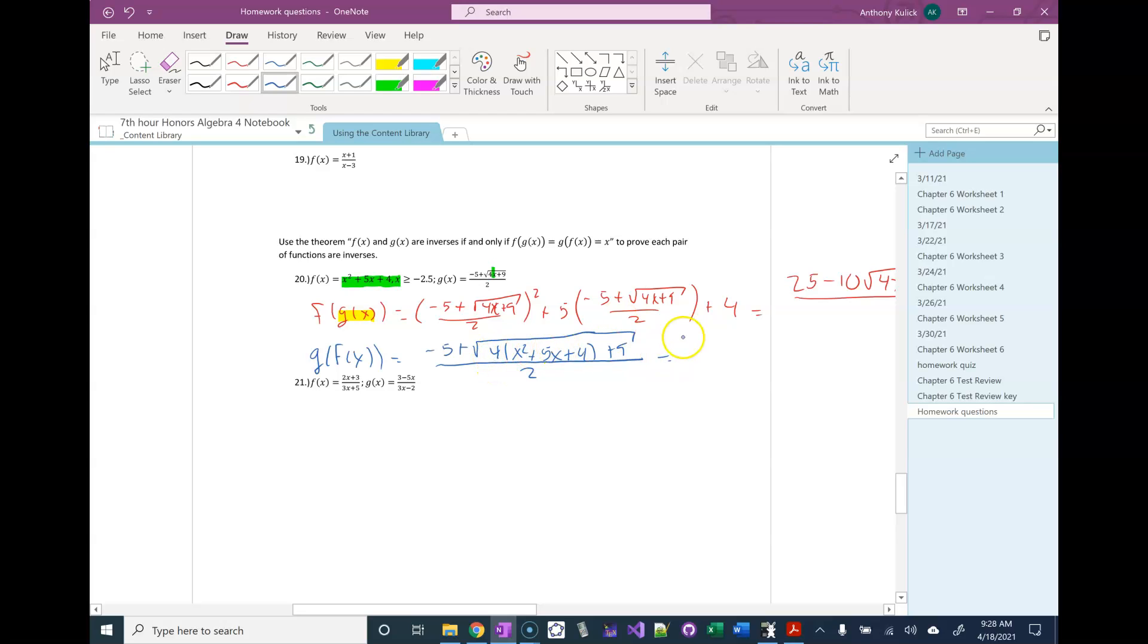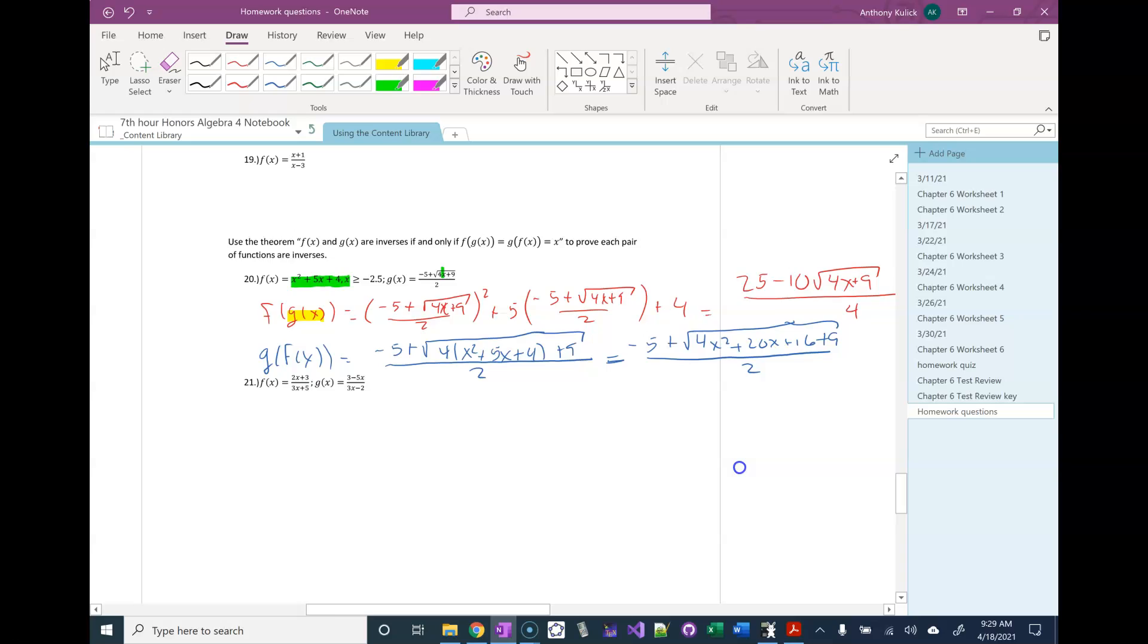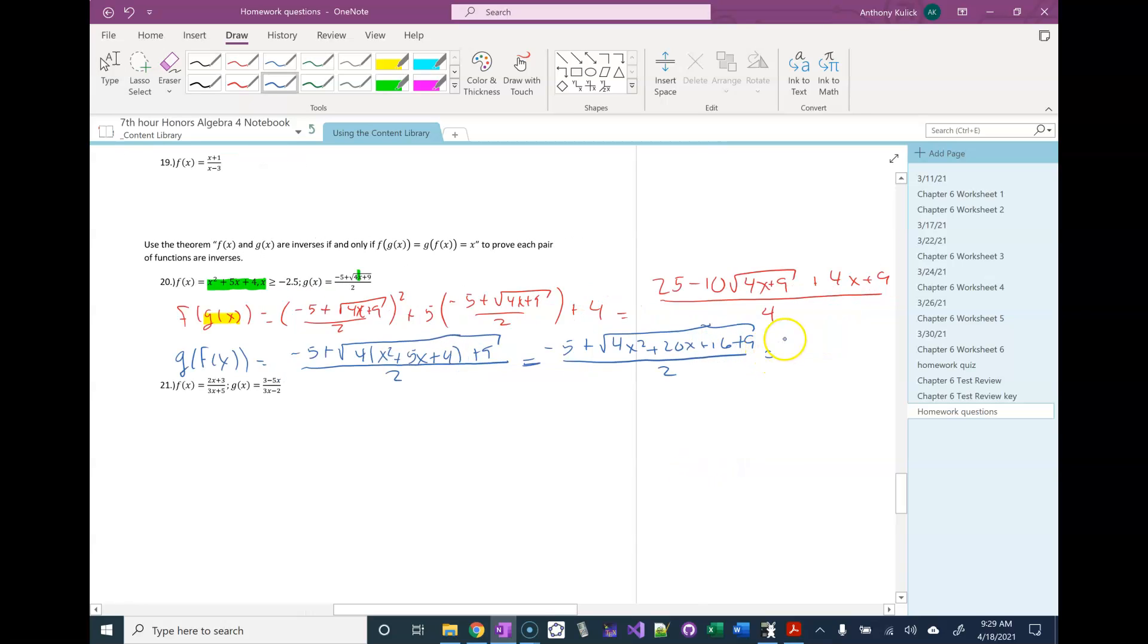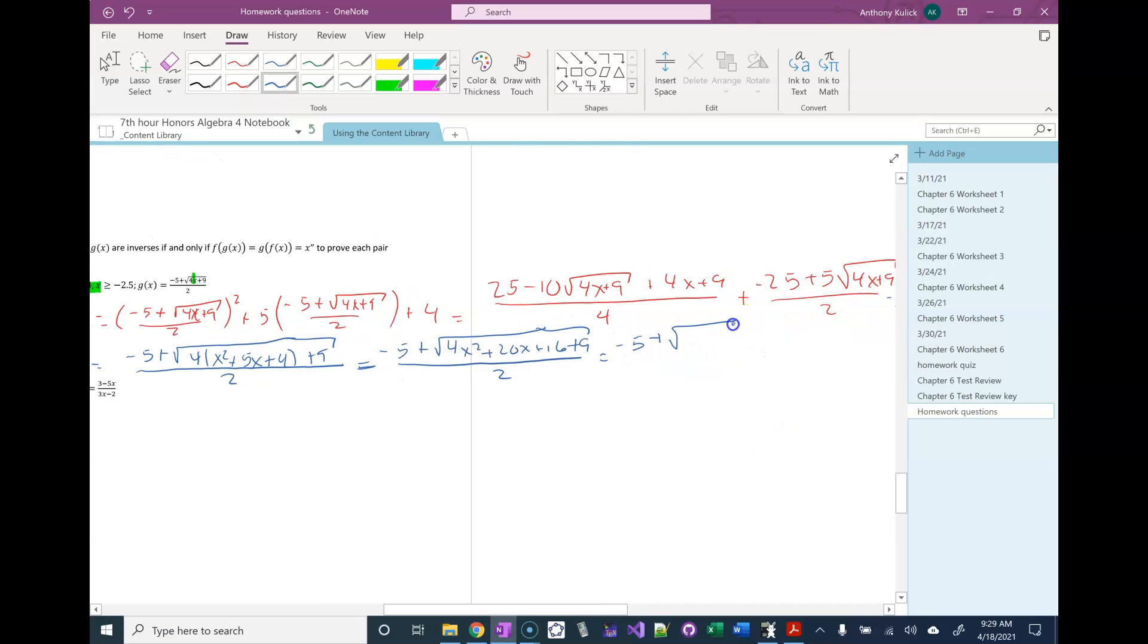So I'm going to start by just distributing that 4 through my parenthesis. That's going to give me 4x squared plus 20x plus 16. I still have that plus 9 at the end over 2. And if I add the 9 and the 16 together, 4x squared plus 20x plus 25 all over 2.